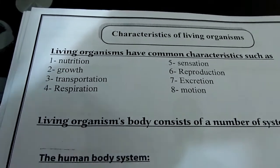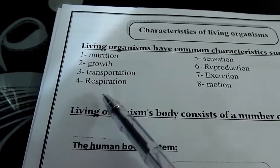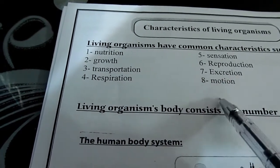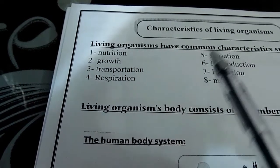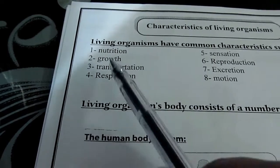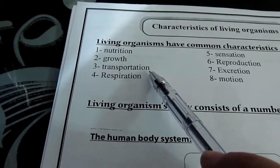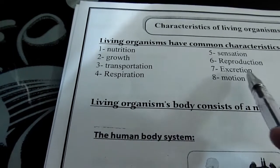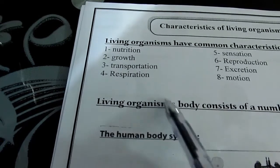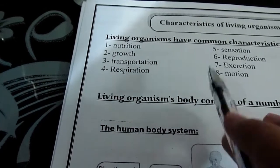Nutrition, growth, transportation, respiration, sensation, reproduction, excretion, and motion. We have eight characters. Those are the main characters of any living organism.